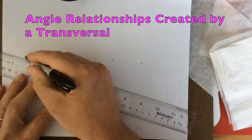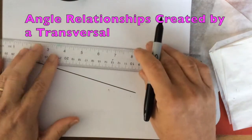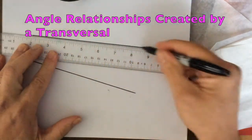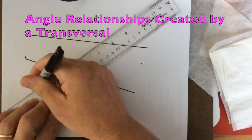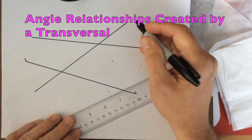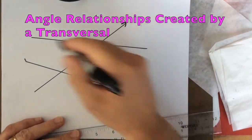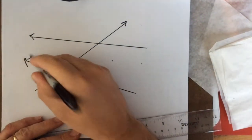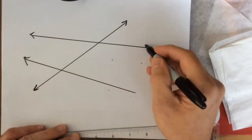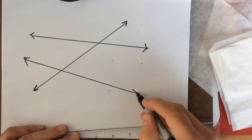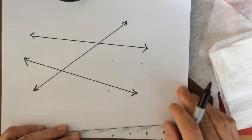I'd like you to take out some paper, and I would like you to follow along with me as I introduce you to some additional angle relationships. What's this a picture of? What vocabulary word is represented here?